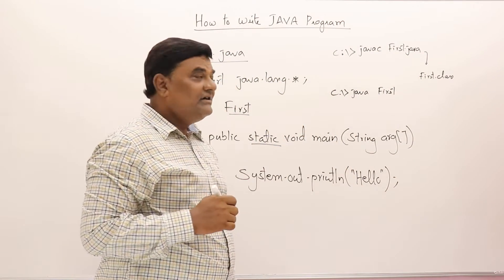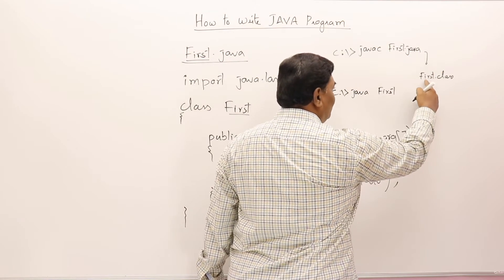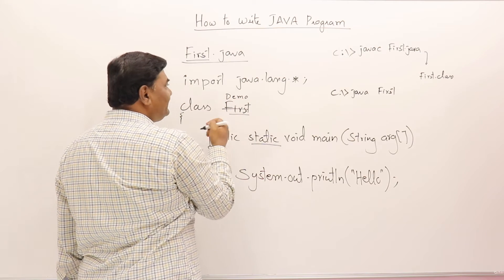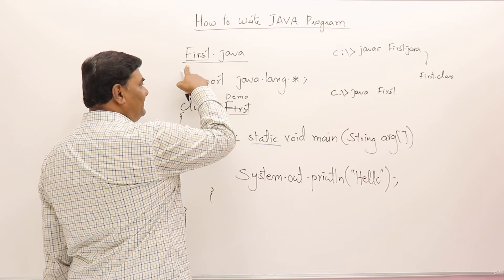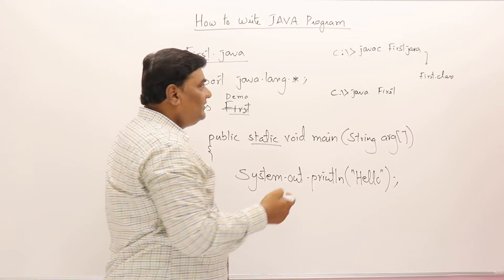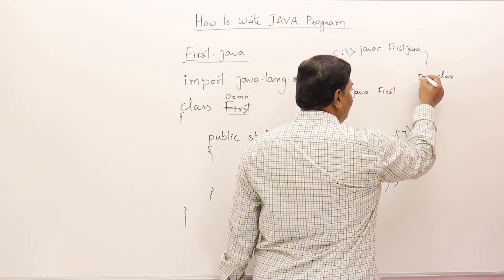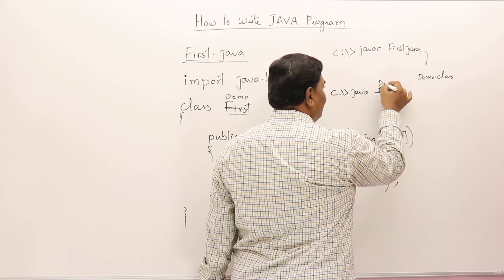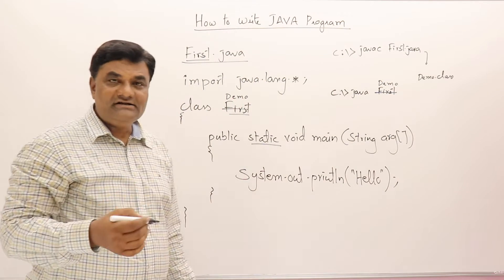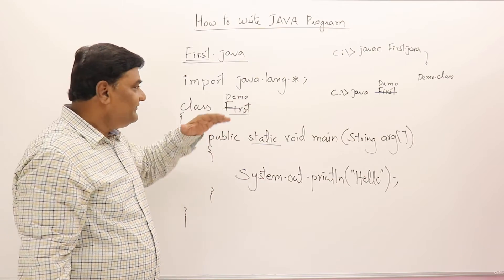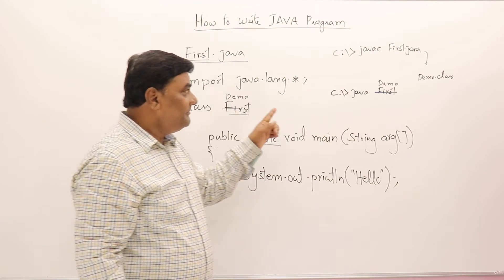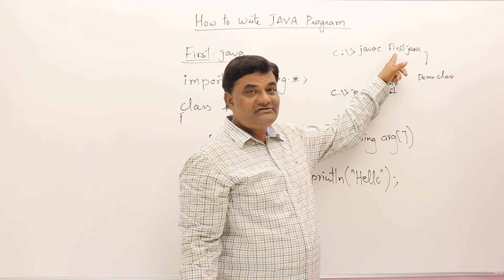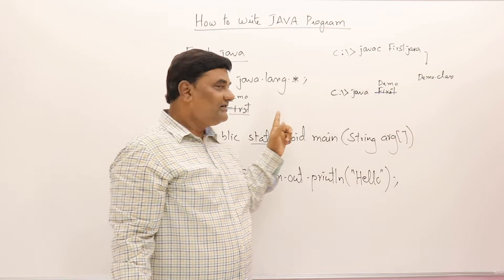When you compile you get first.class. But if I give a different class name - say demo - instead of first, that is also possible. The program file name is first but the class name is demo. Then when you compile, you will get demo.class, and while running you don't say java first, you say java demo.